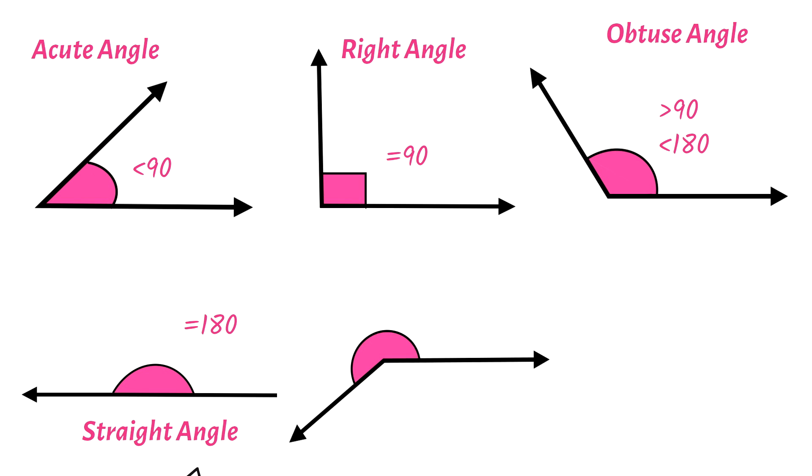A reflex angle is an angle that is greater than 180 degrees. So angle 250 degrees and 300 degrees will be examples of reflex angles.